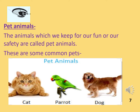Here is pet animals. Animals which we keep for our fun or our safety are called pet animals. These are some examples of pet animals: cat, parrot and dog. Do you know that animals also feel pain just as we do? So we should never harm them and always be kind with animals. And one more thing, kids — we should always take our pets to a veterinary doctor whenever required.